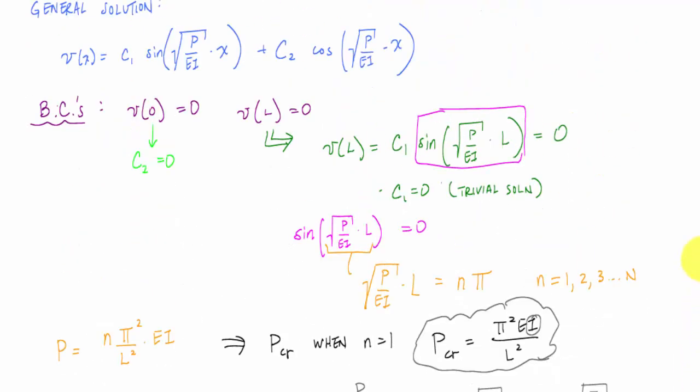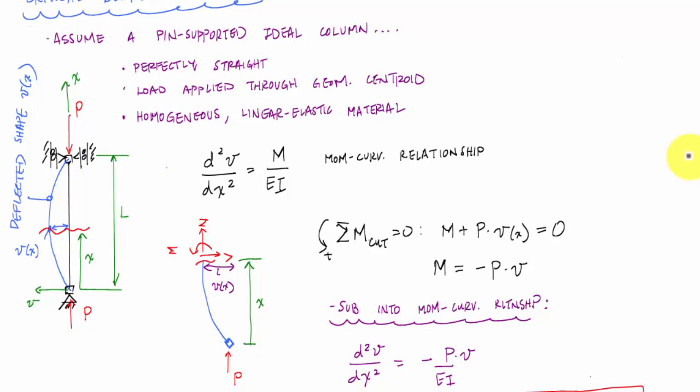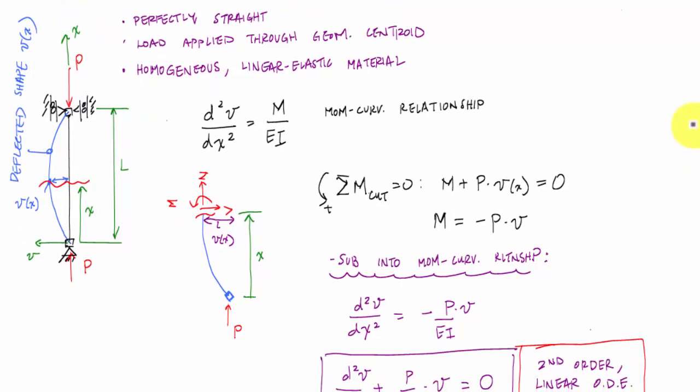Because when I change the boundary conditions from pin-pinned to, let's say, fixed-fixed, I would suspect that the critical load that it takes to buckle the column would change.